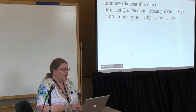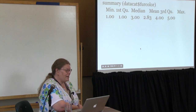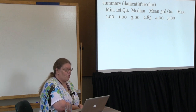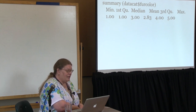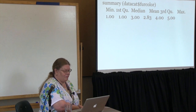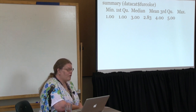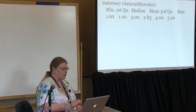So what is going on here? I did the summary command in R on my data set on the variable fur color. I get a min of 1 and a max of 5, and a median of 2.38. This doesn't make any sense. Fur color is a categorical variable, and this test — a summary — is for continuous variables.